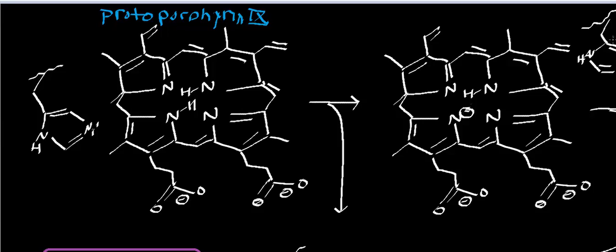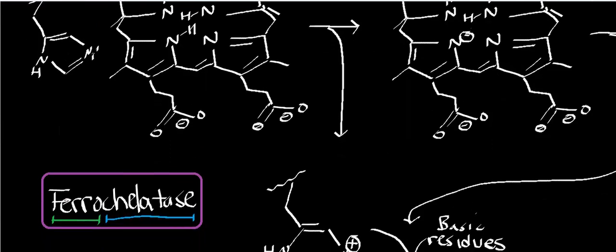We're going to take protoporphyrin 9, put an iron in the center, and then we'll have heme B. If we want to make other types of heme, we'll have to do processing from heme B, but we're not covering that in this video.